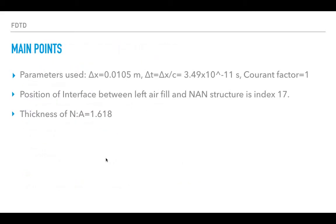The main parameters we have to figure out in the code are: delta x step size of 0.01 meters, and delta t equals delta x divided by c, chosen since the Courant factor is 1 and hence it's stable. The positive interface between the left air field and the NAN structure is at index 17 for both the Fibonacci and periodic NAN structures. The thickness of N2A is 1.618, which is basically (root 5 plus 1) divided by 2.